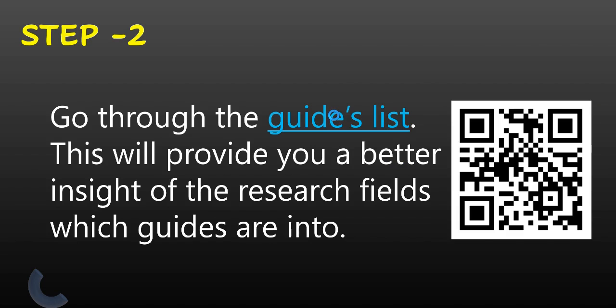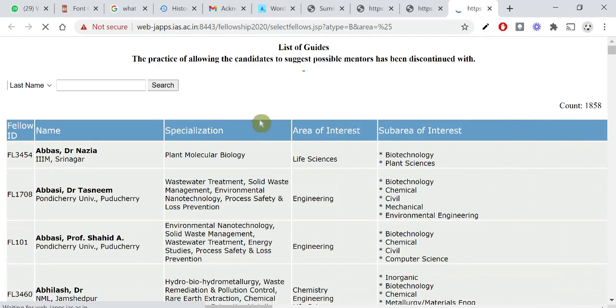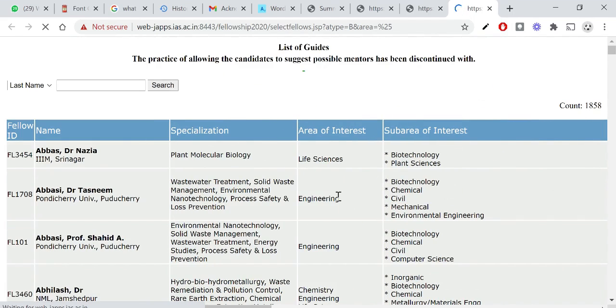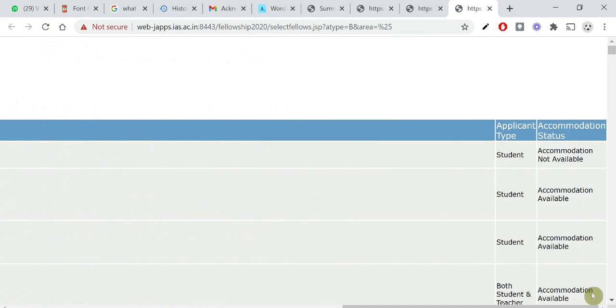So, now let me go to the guides list. Here are the list of guides. There are a number of guides that are listed. Their name, specialization, area of interest, and sub-area of interest. And it also lists the applicant type, whether only students can apply or both students and teachers can apply. And it lists also the accommodation status.